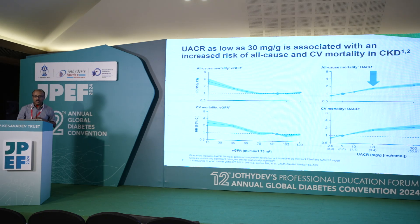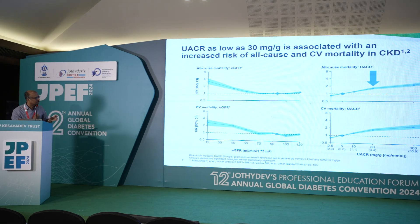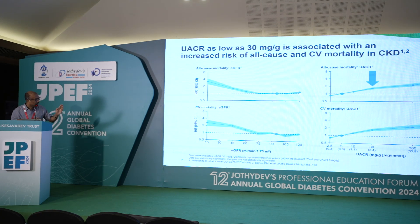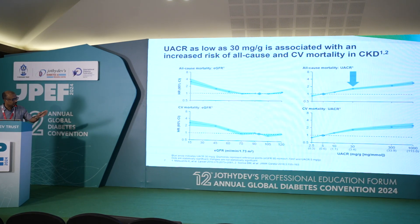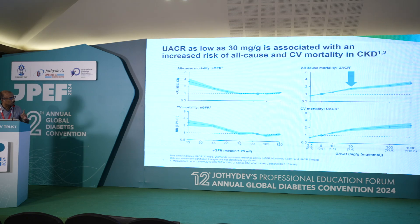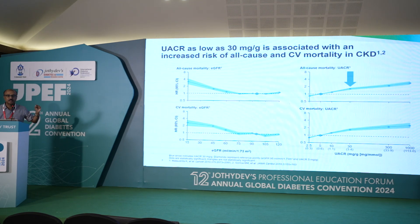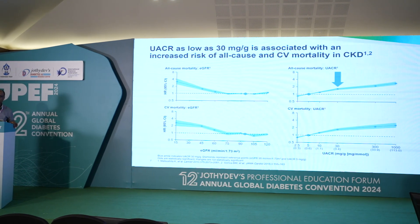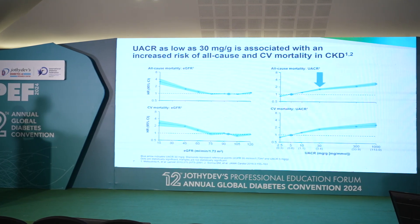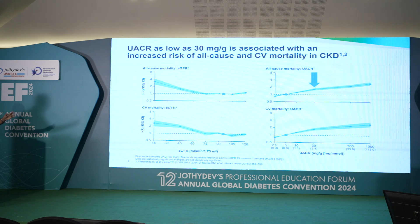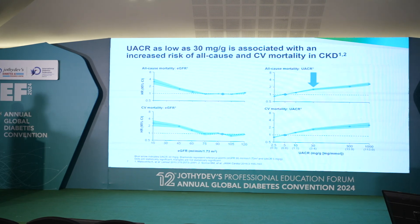How much albuminuria is needed before risk increases? Data shows that all-cause mortality increases when your UACR rises to just 30 mg/g — which is the upper limit of normal in laboratory reports. Even at a level of around 30, there is an increased risk of all-cause mortality, showing that any degree of albuminuria is clinically important.